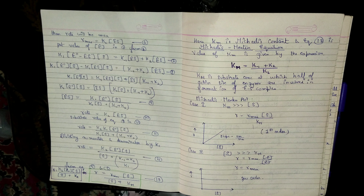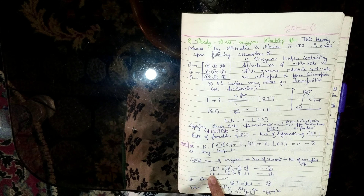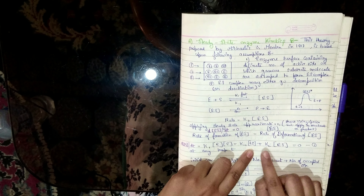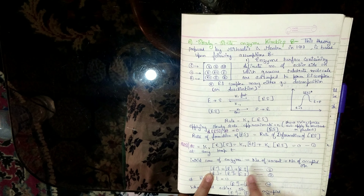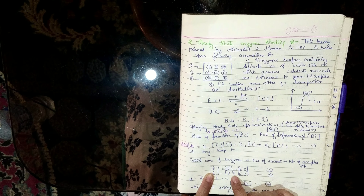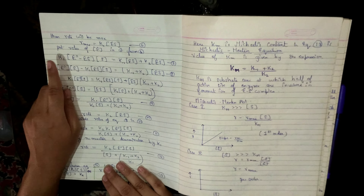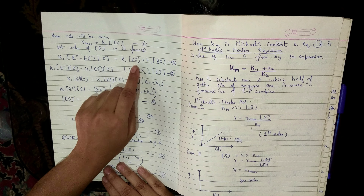First, we take the enzyme concentration value from equation 3 (E = E₀ − [ES]) and substitute it into equation 1. Equation 1 is: k1[E][S] = k-1[ES] + k2[ES]. We replace E with (E₀ − [ES]), so E is removed and replaced by E₀ − [ES].